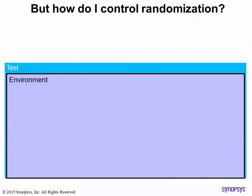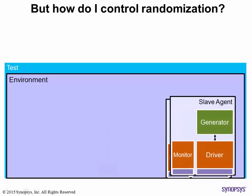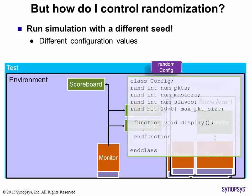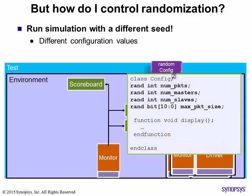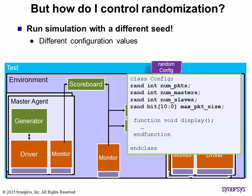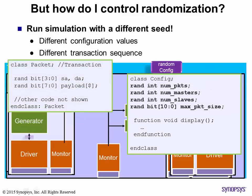But how do we create different configurations and transactions for different simulations? Every simulator allows you to provide a random seed at runtime. This allows you to generate different values and sequences without modifying your test or test environment. That is the power of randomization.